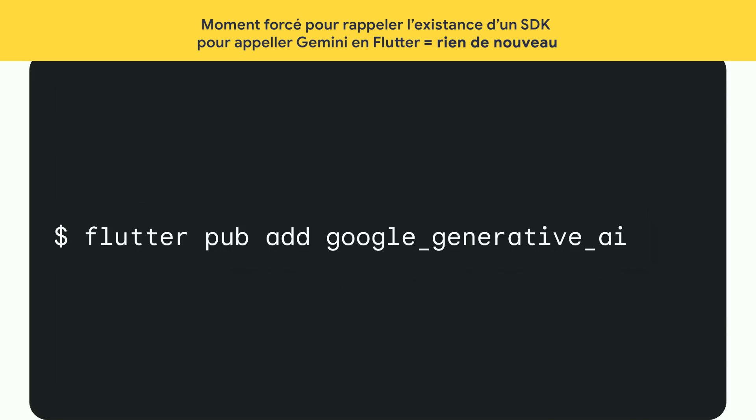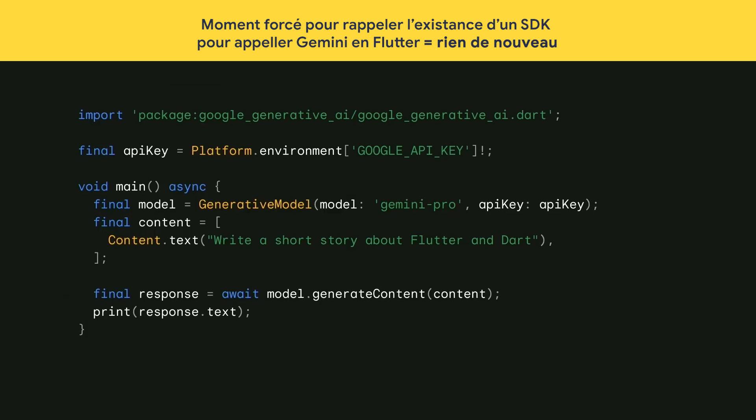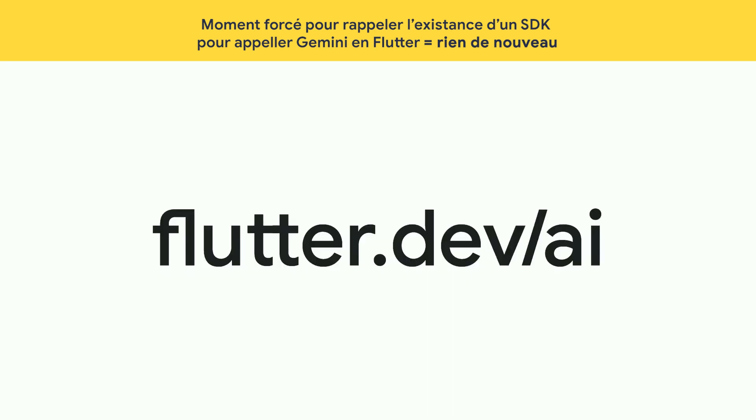You can run this command to add the Google Generative AI package. Here's an example using the Gemini Pro model — I create an object called the generative model, give it some content which is our prompt, and that can include text or image data. The response can include text or images also. Go to flutter.dev/AI to learn more.